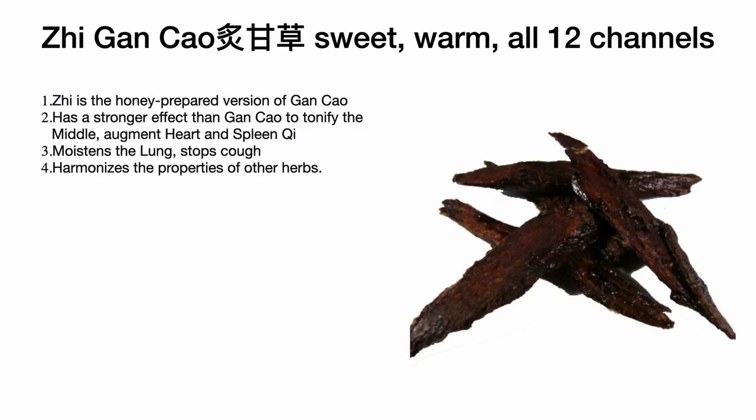Finally, Zhi Gan Cao — honey-fried licorice — is a sweet, warm herb that enters all 12 channels, and is the final herb in this formula. Zhi is a honey-fried preparation of Gan Cao — licorice root — with a stronger effect to boost the middle and augment the heart and spleen, making it a tonic herb. Zhi Gan Cao also moistens the lung, stops cough, and harmonizes the properties of the other herbs.